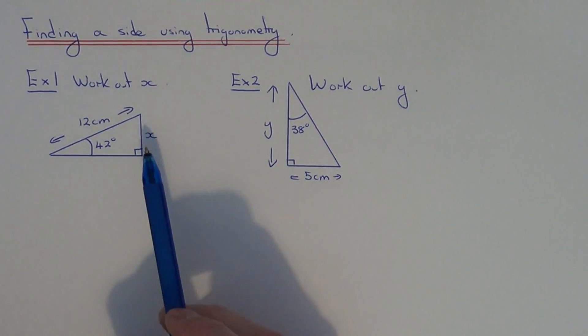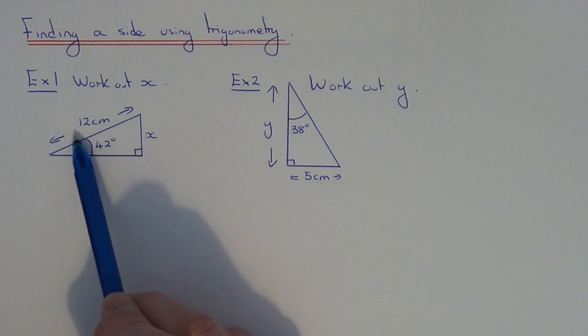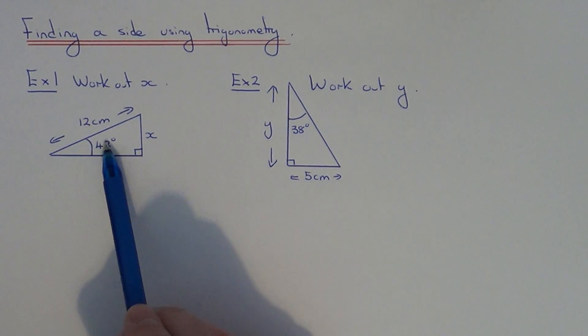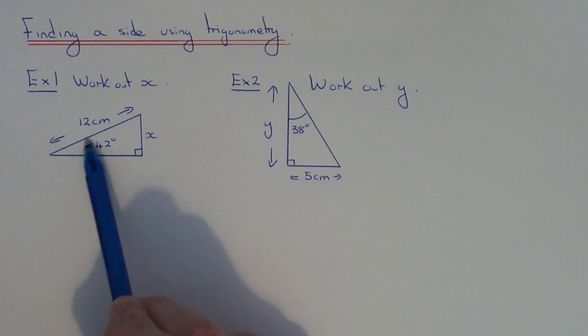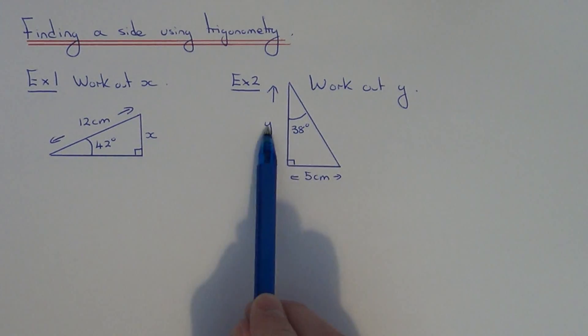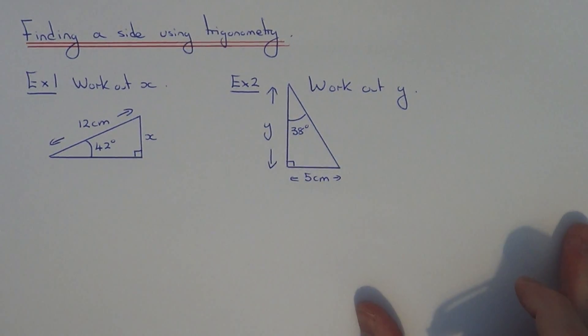If we are using trigonometry to work out a missing side, what you will need is one of the other sides of the right angle triangle and you'll also need the angle. You can see that on example one we have the side and the angle, and on example two we have the side and the angle, and we need to find one of the other sides. So this is clearly a trig question.